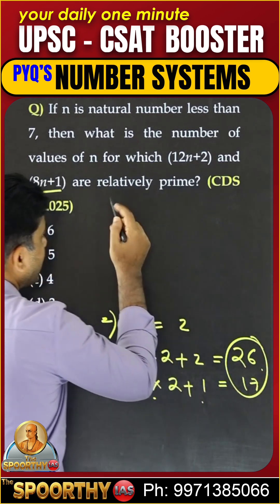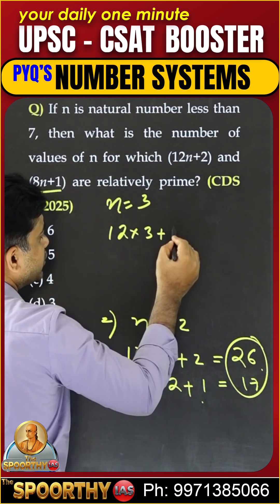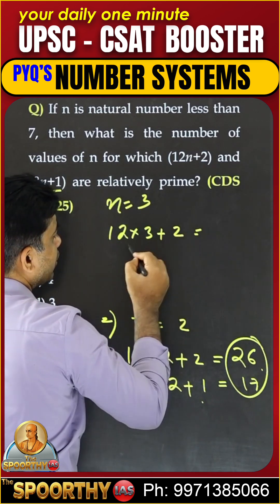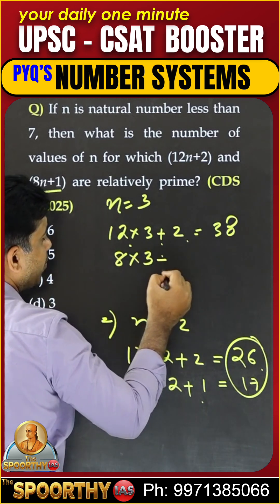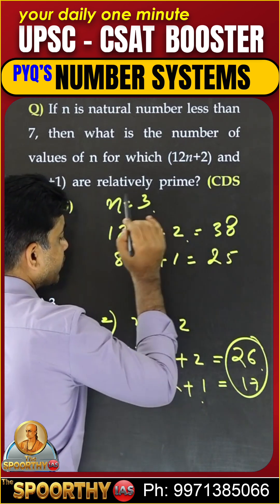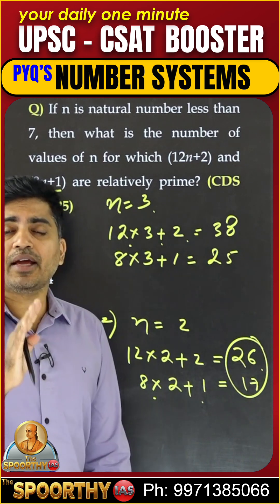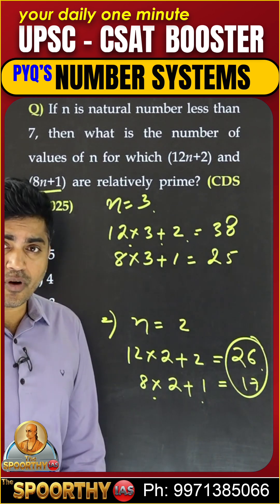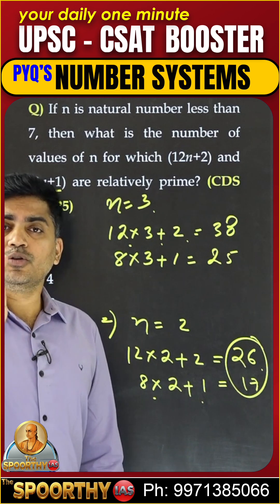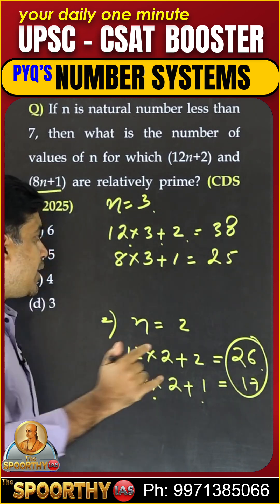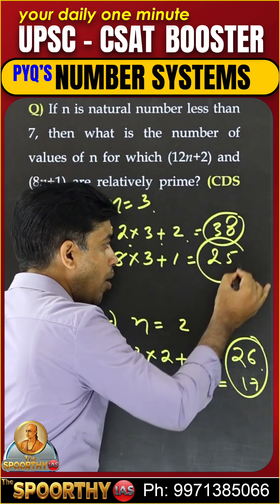Third case: n equal to 3. 12 into 3 plus 2 equals 36 plus 2, which is 38. And 8 into 3 plus 1 is 25. That's the third one. Like this, take n equal to 4, n equal to 5, n equal to 6. For all 6 cases you will get only co-prime combinations, like 38 and 25 having no common factors.